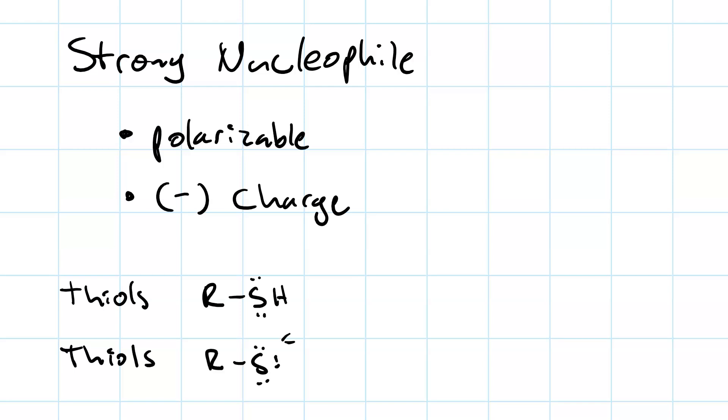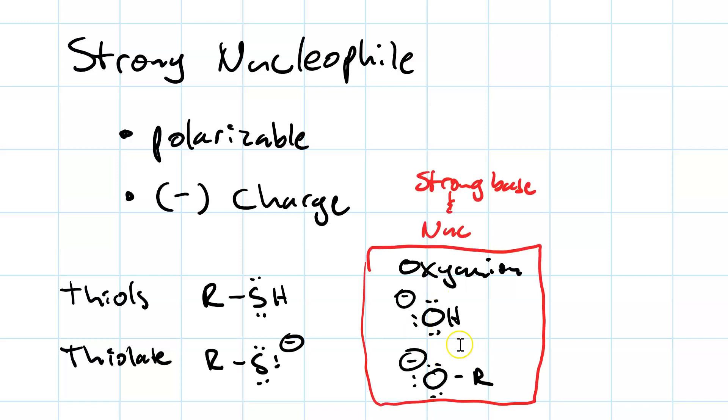Examples of strong nucleophiles include thiols and thiolates, and the thiolate is stronger than the thiol. Oxyanions, like hydroxide and alkoxide. These are strong nucleophiles, but they're also strong bases. Be careful using oxyanions, because the fact that they're a strong base means they're also going to favor E2 reactions, as well as SN2.